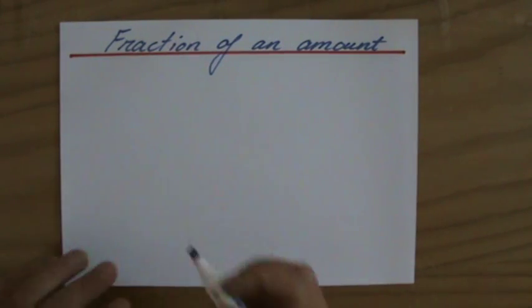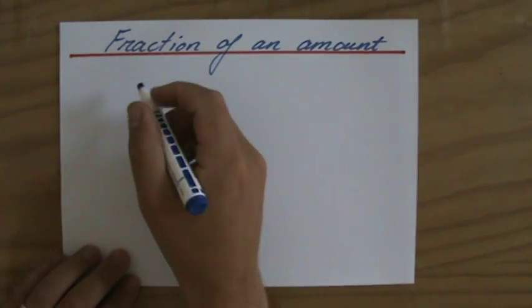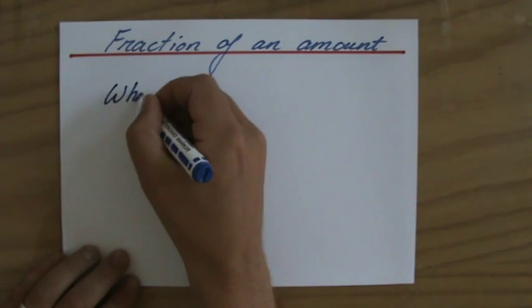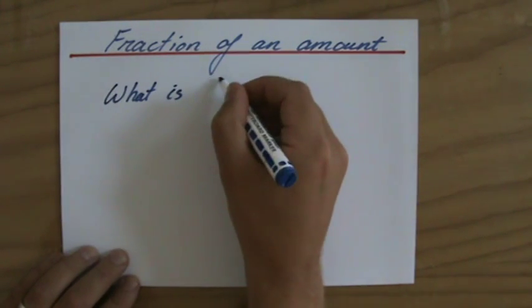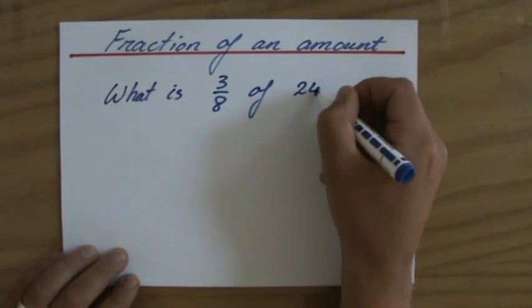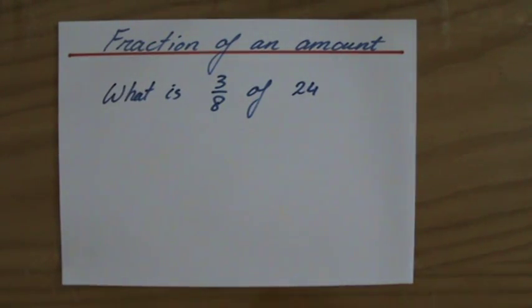Let's have a look at how to calculate or find a fraction of an amount. What are typical questions you can get? For instance, what is 3 over 8, or 3 eighths, of 24? What is 3 eighths of 24?